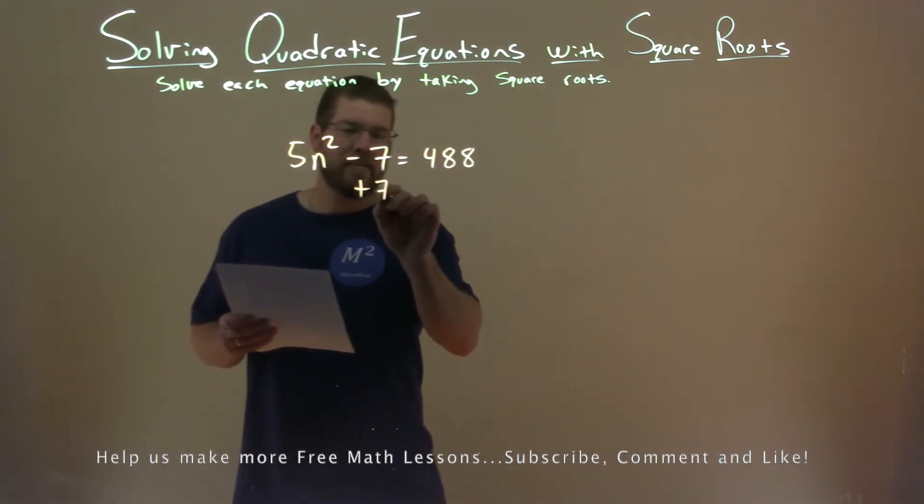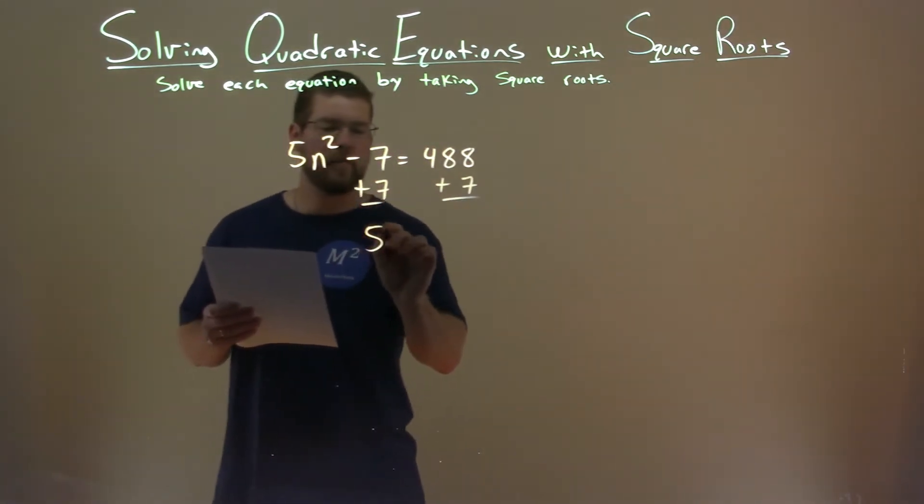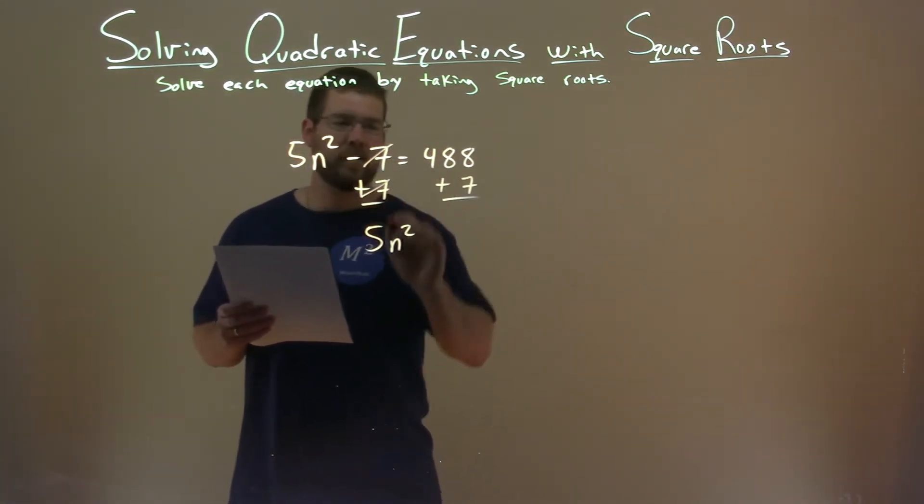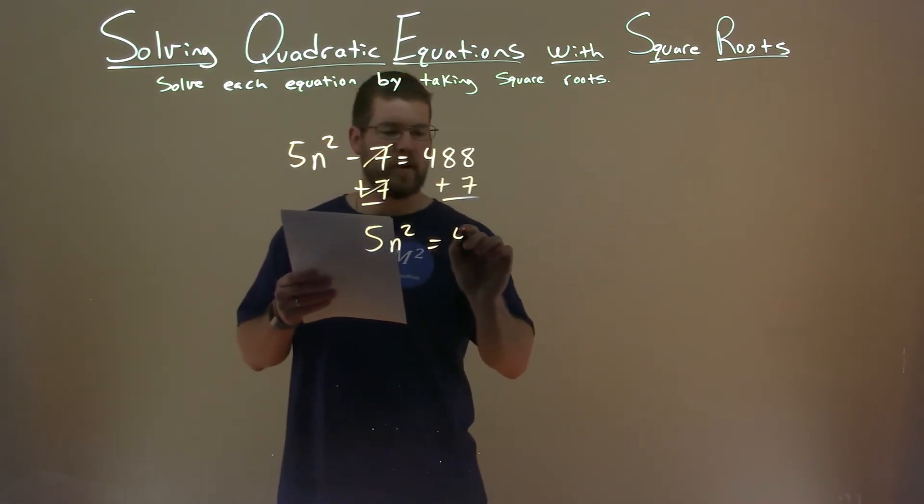First thing I want to do is add a 7 to both sides. It's winking at me. This brings down the 5n squared, 7s cancel, and 488 plus 7 is 495.